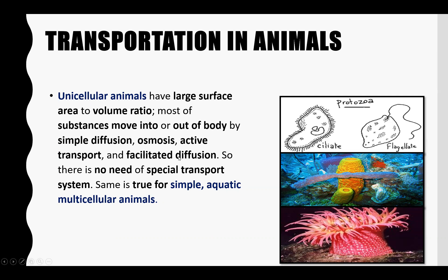This is also true in simple multicellular animals. In the diagram, unicellular animals are shown, which are called protozoans, which are animal-like protists.